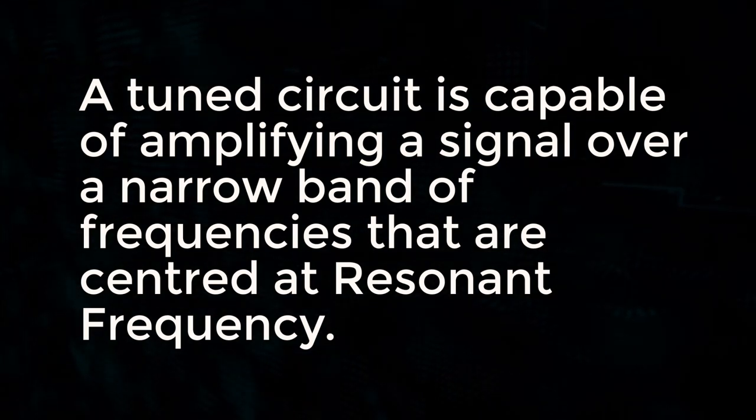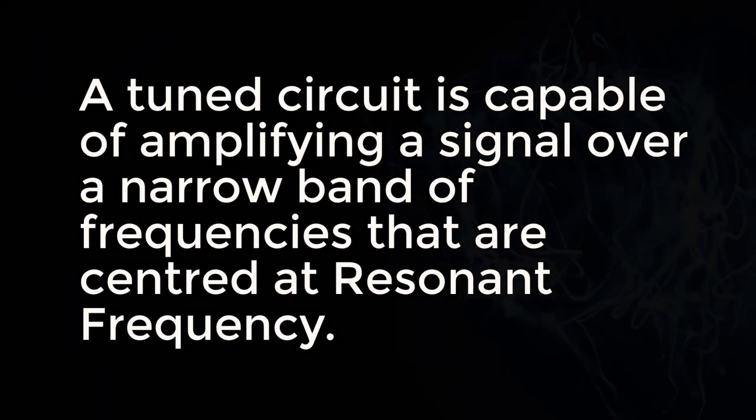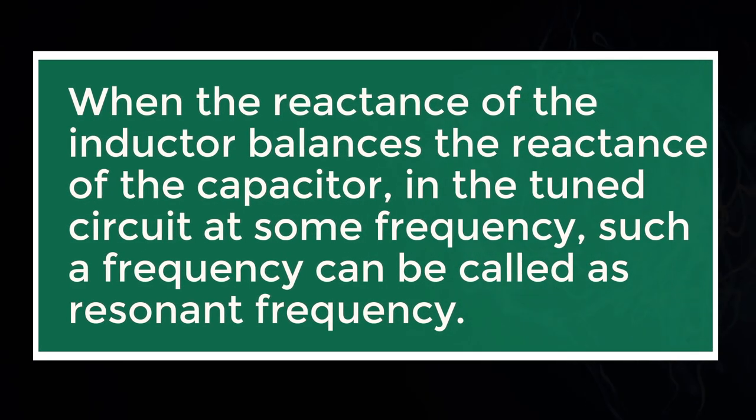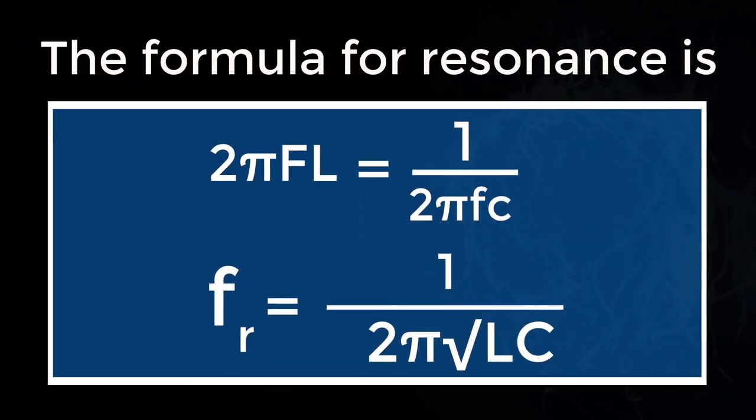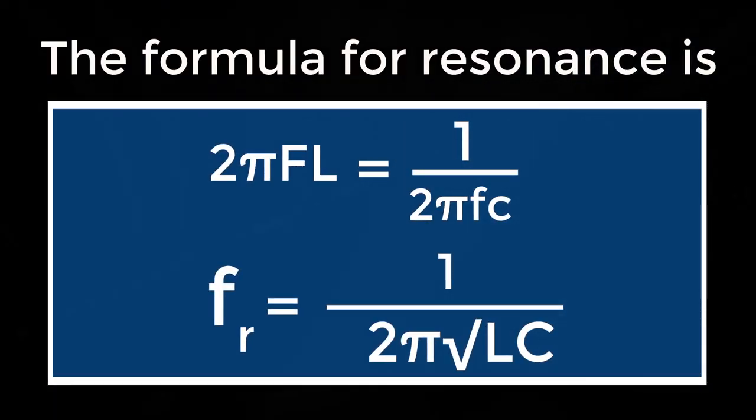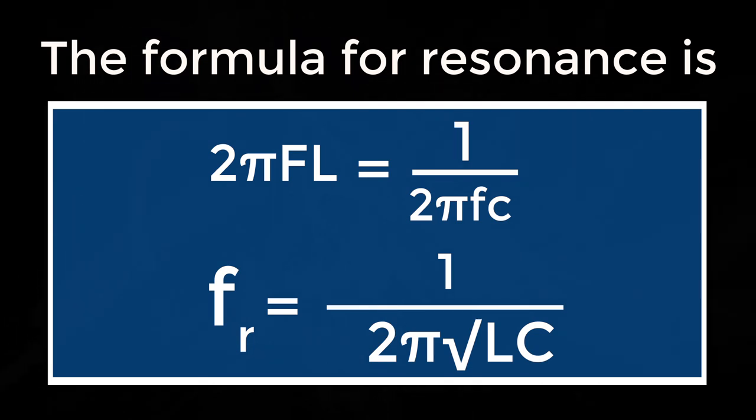When the reactance of the inductor balances the reactance of the capacitor in the tuned circuit at some frequency, such a frequency can be called as a resonant frequency. It is denoted by FR. The formula for resonance is: 2πFL equals 1 by 2πfc, and FR equals 1 by 2π root LC.